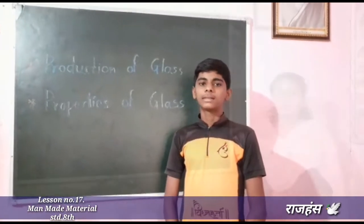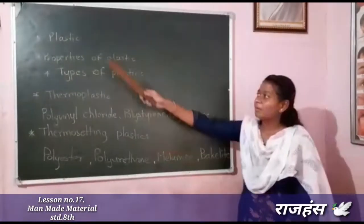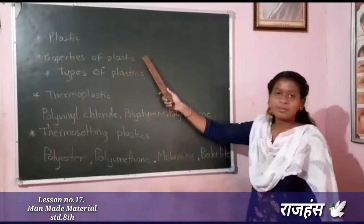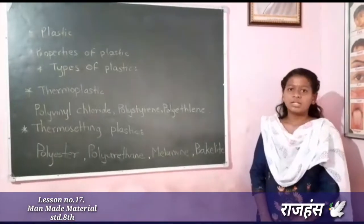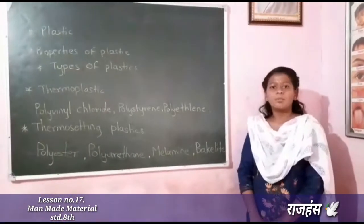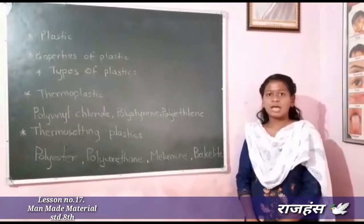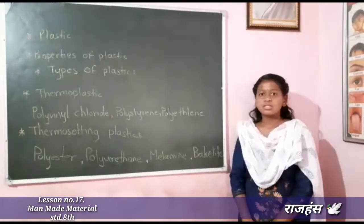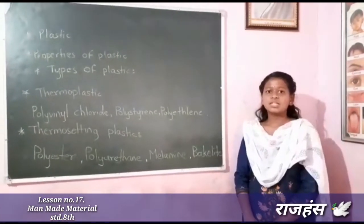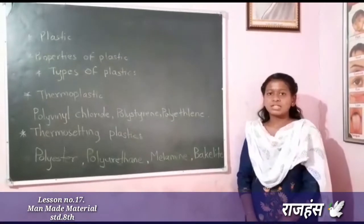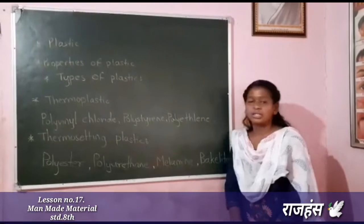Now properties of glass. Today I will give you information about plastic, properties of plastic, and types of plastic. A material which is made by polymers is called plastic. Depending upon heat, plastics are of two types: first, thermoplastic, and second, thermosetting.